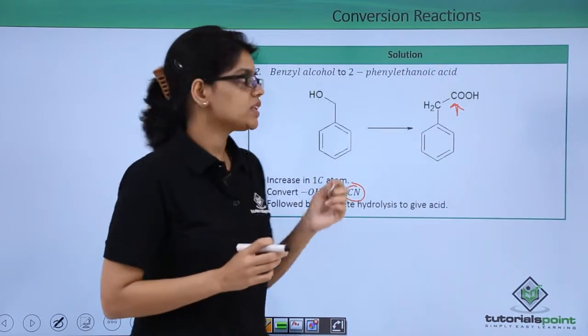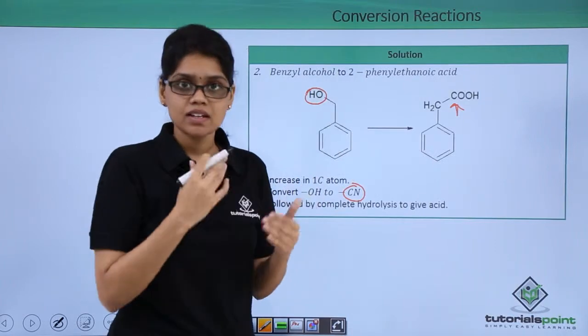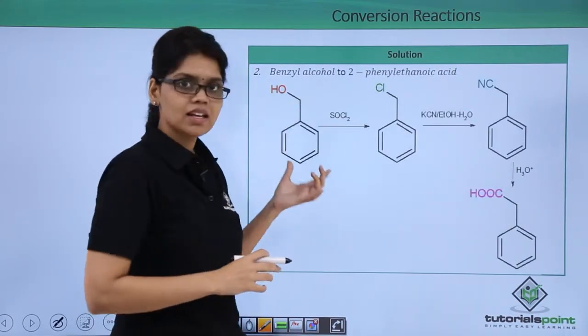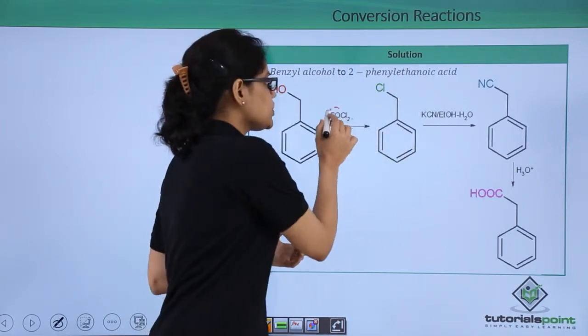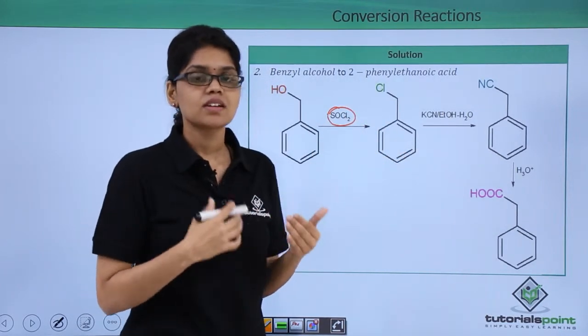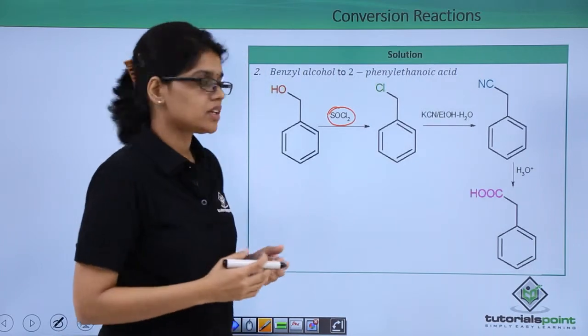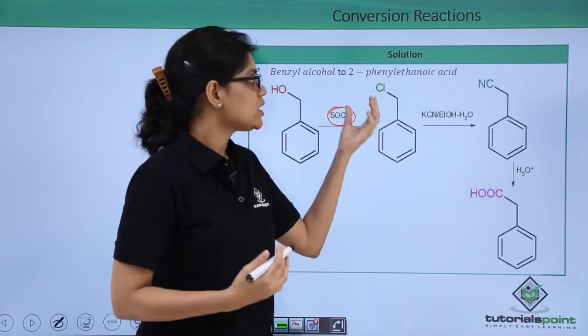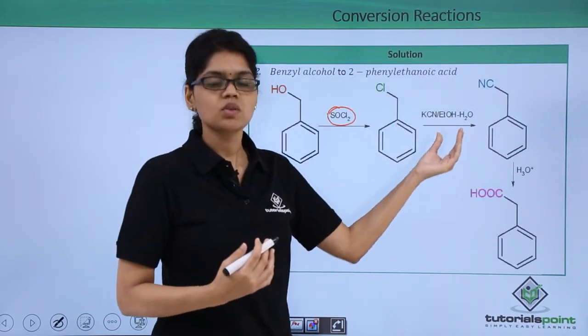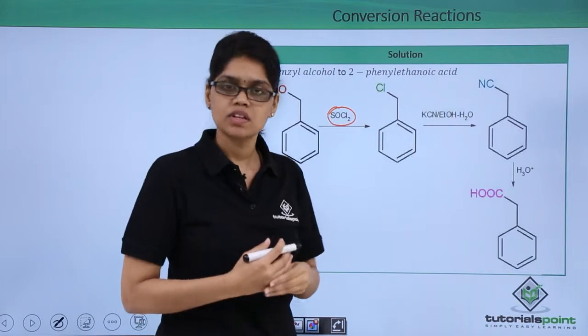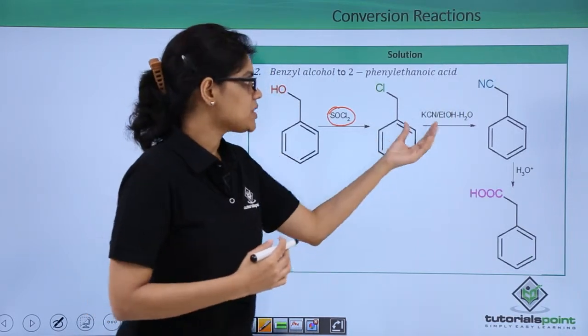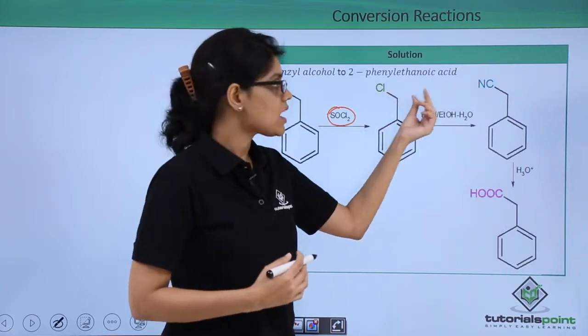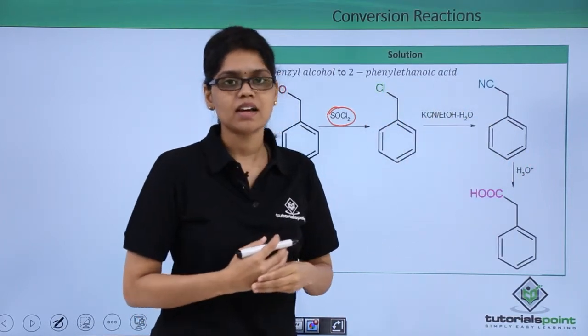But we also know that OH is a very poor leaving group and it cannot be directly substituted. Therefore, first we need to convert this benzyl alcohol to benzyl chloride by reacting it with SOCl2. Here we are converting OH which is a poor leaving group to chlorine which is a good leaving group, so that now it can be easily substituted using KCN in the presence of EtOH in water. In the presence of alcoholic KCN, CN- will substitute chlorine and you get benzyl cyanide as the product.